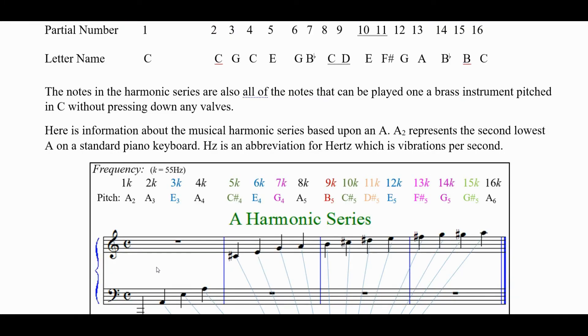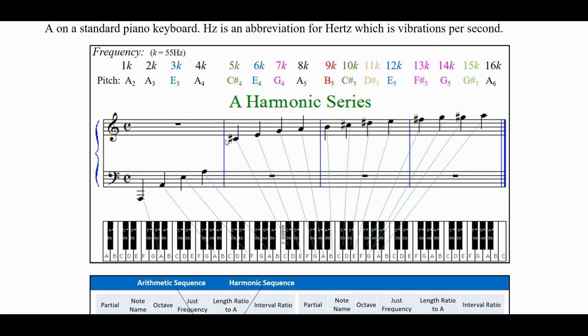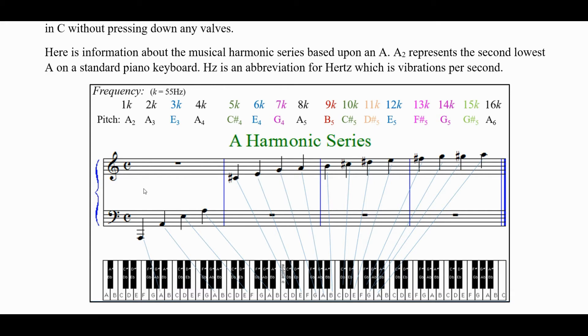So here's a harmonic series based on a low A, the 2nd lowest A on the piano. A 2 is this note right here. And so you can see this laid out, and there they are on the keyboard. If K is the frequency of the lowest one, which is 55 Hz, that is vibrations per second, then you can see the pitch of all of these others. You can see the frequency and the pitch.